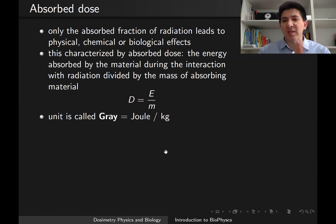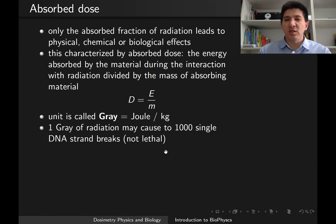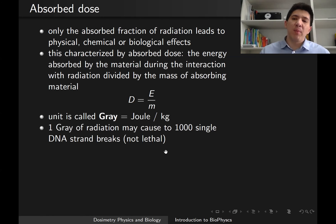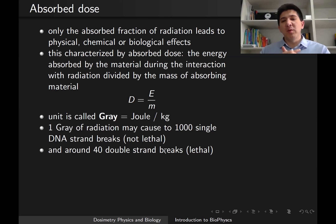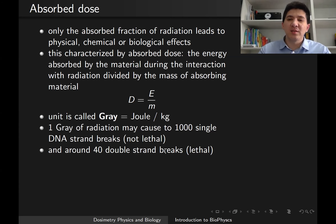Before we do the calculation, I'd like to mention that one gray of radiation may cause 1000 single DNA breaks, which are not lethal — the cell can repair itself. At the same time, one gray of radiation is enough to break 40 double strands of DNA, which is already lethal. So even one gray is not good. We are going to do calculations for higher grays of radiation.